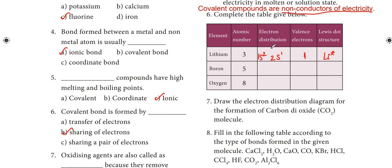Next, boron with atomic number 5: its electron configuration is 1s2, 2s2, 2p1. It has 3 valence electrons. The Lewis dot structure for boron shows 3 dots representing the 3 valence electrons.